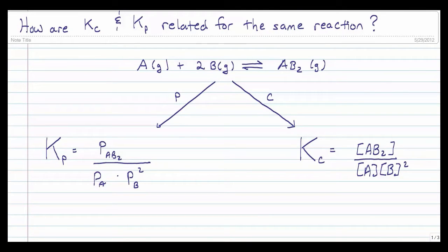Hi chemistry students. Let's talk about the relationship between K sub C and K sub P for the same reaction. We'll be speaking particularly about a reaction where everything's in the gas phase that's part of our equilibrium expression. That way the pressure and the concentration make sense when we look at them together. So start off with a simple reaction of A plus 2B in equilibrium with AB2. All of these are in the gas phase.